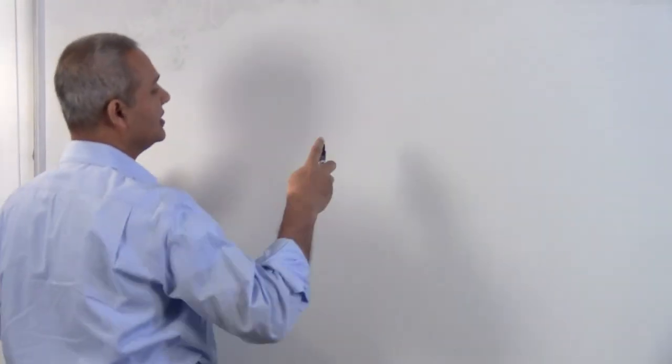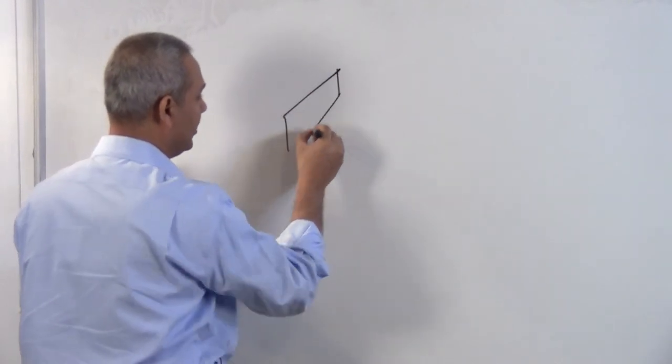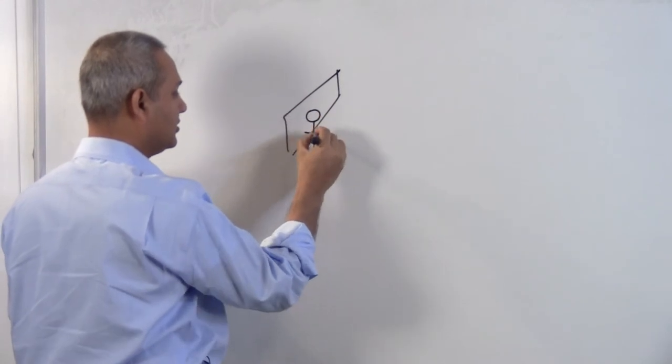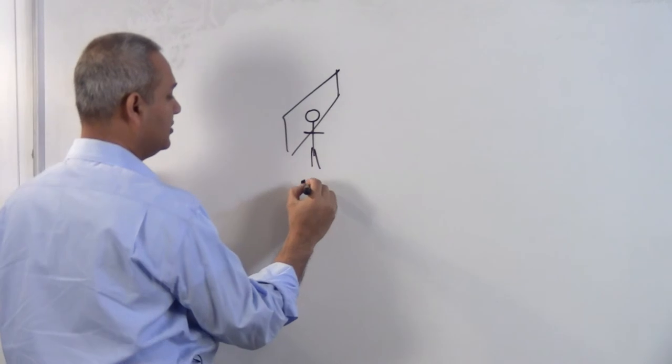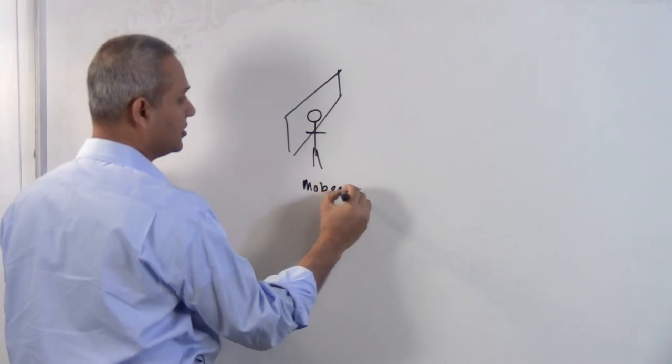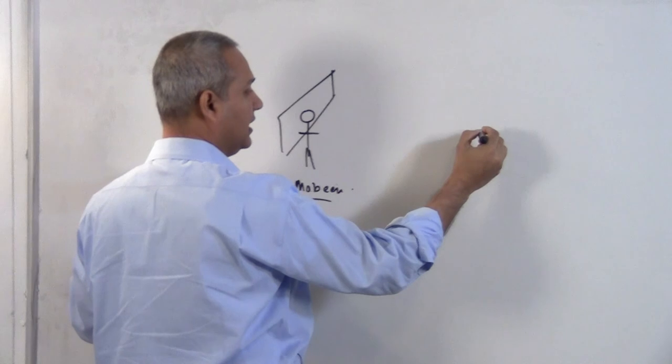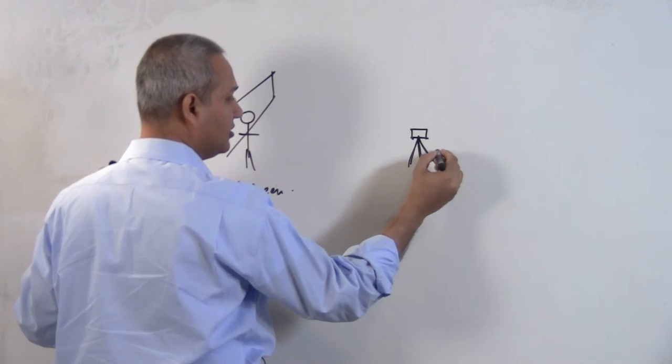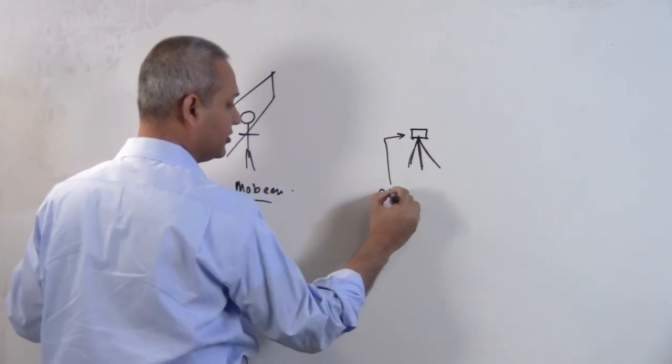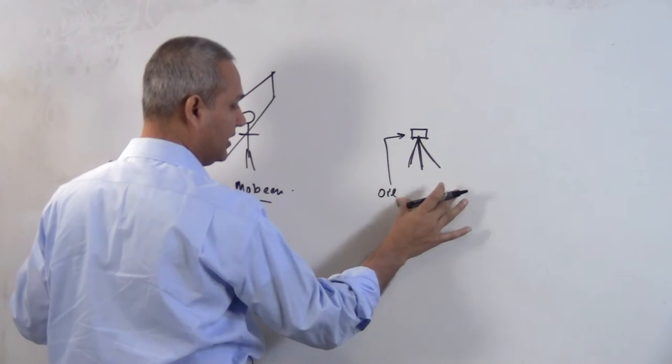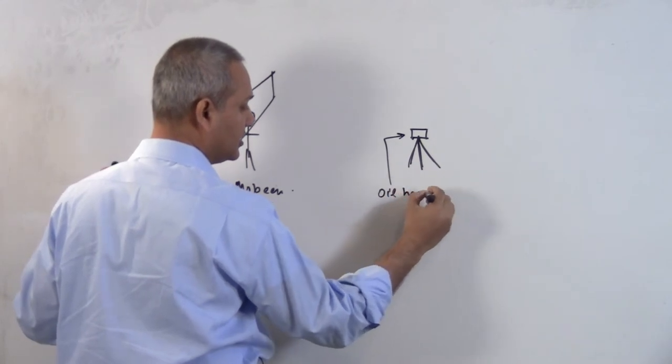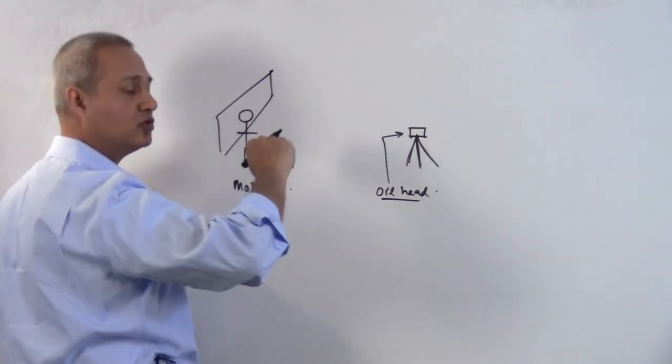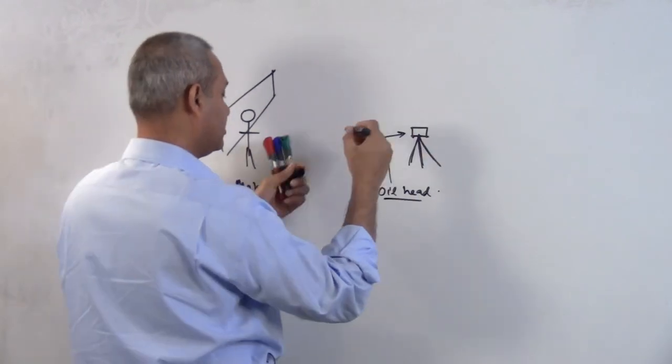This is the whiteboard, and this is Mobin standing here. On this side, I have a nice tripod with an oil head. The benefit of the oil head is that it moves a little bit smoothly.